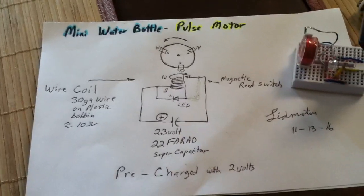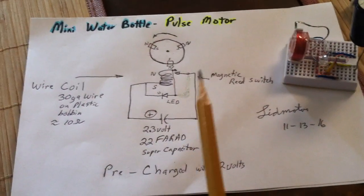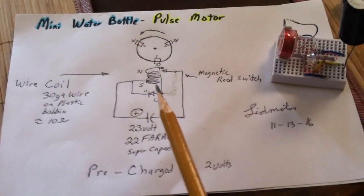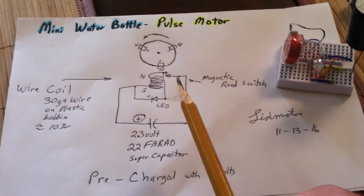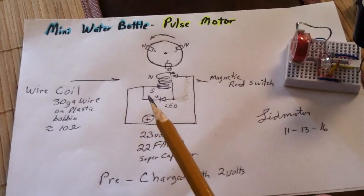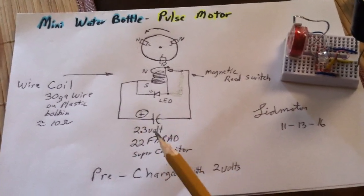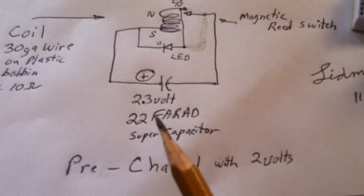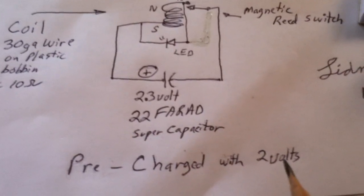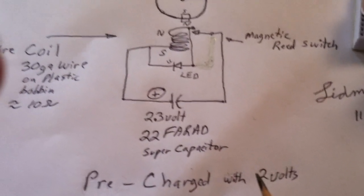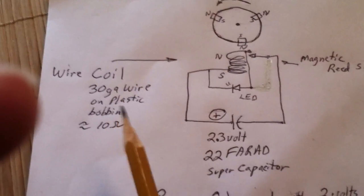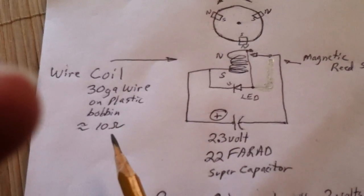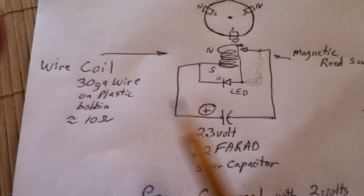And what it is is a very, very simplistic or simple coil with a reed switch driver unit with a big super capacitor pre-charged with 2 volts, and it makes for a real nifty little demonstration. The wire coil is 30 gauge on a plastic bobbin, about 10 ohms. It's an air core.